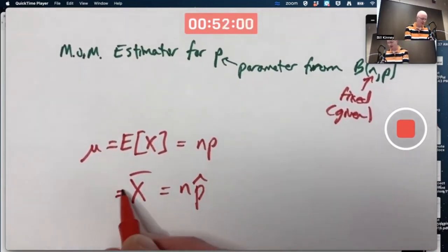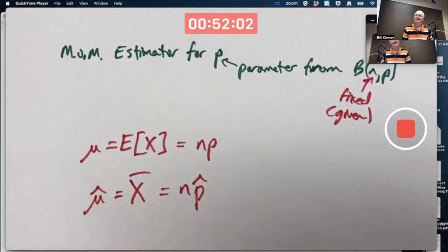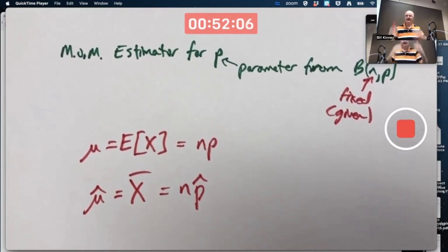By the way, we could also call x̄ μ̂ if we liked. Anytime you put a hat above a parameter, it's the standard symbol for an estimator of that parameter. Parameters are numbers. Estimators are statistics. They are different things.